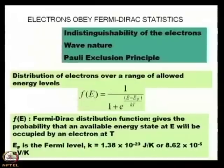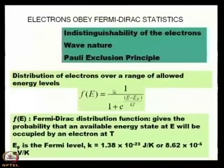This is the distribution of electrons over a range of allowed energy levels. Remember that if there are allowed energy levels, there is a possibility of finding an electron there. If there are no states, do not try to find electrons there. So there must be allowed energy levels.